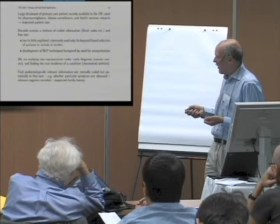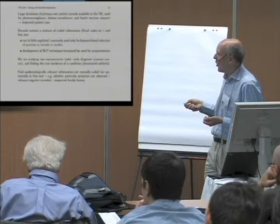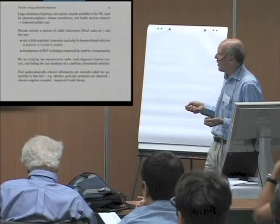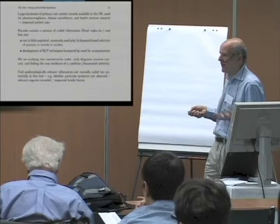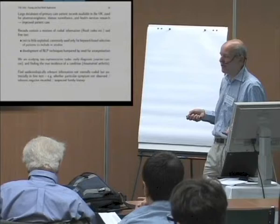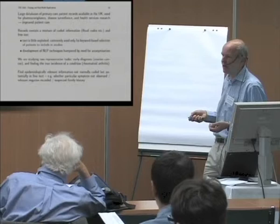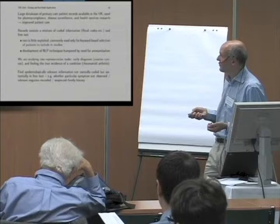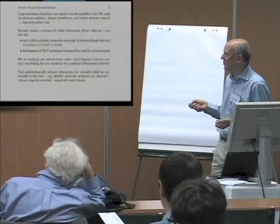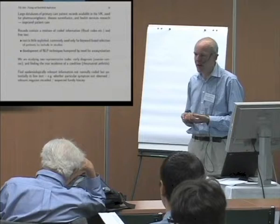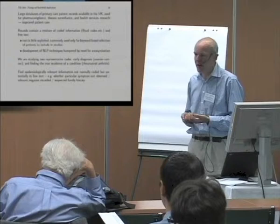Our overall task is to find relevant information that's not normally coded. A lot of stuff is not coded but is present in the free text — whether a particular symptom was observed or not, family history, things potentially relevant that the doctor might not have coded. The tasks we're looking at are early diagnosis of ovarian cancer and finding the true incidence of rheumatoid arthritis, which is difficult to diagnose and often isn't coded properly, but we can find clues about it in free text.